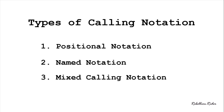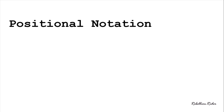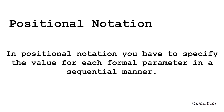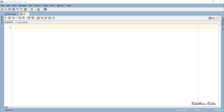Let's start with the first one which is Positional notation. In Positional notation you have to specify the value for each formal parameter in a sequential manner. This means that you have to provide the values for the formal parameters in the same order as they are declared in the procedure or in the function. This is the same notation which we used in the previous tutorial where we learned how to create PLSQL functions and procedures.